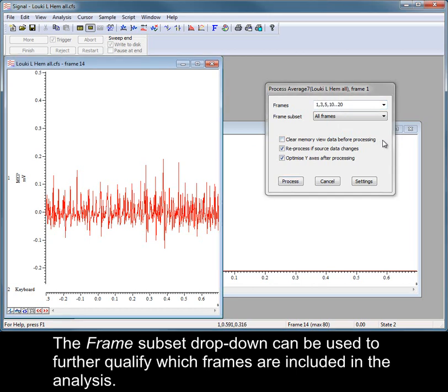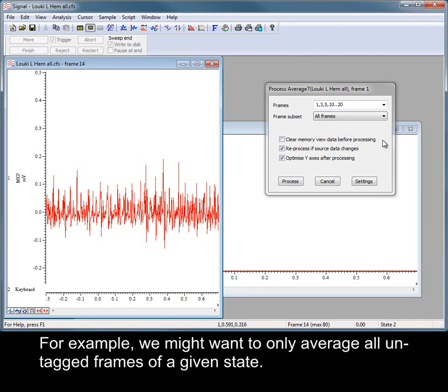The frame subset dropdown can be used to further qualify which frames are included in the analysis. For example, we might want to only average all untagged frames of a given state.